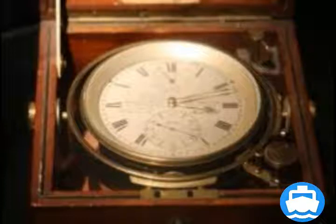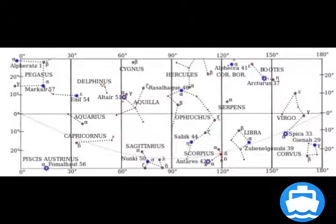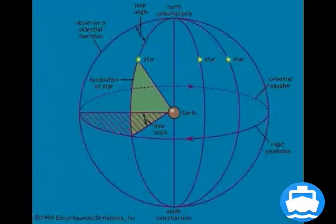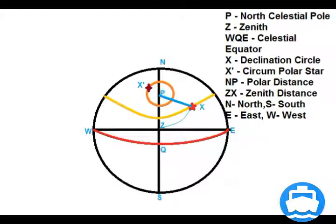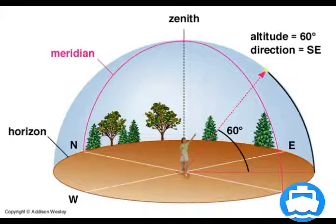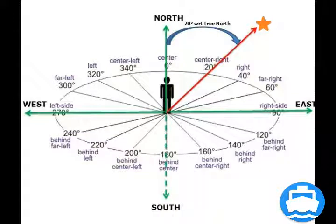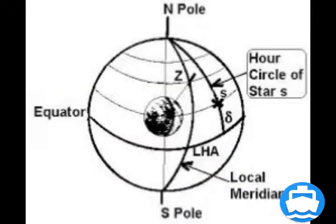Now we have the azimuth and altitude of the star. We will identify the star using a star chart in our nautical almanac. From the nautical almanac, we obtain the declination and SHA of the star in question. Then we solve the PZX triangle to calculate zenith distance and true azimuth. Solving the PZX triangle gives us a position line and not an accurate position — because zenith distance is an approximation. So we will require many subsequent observations to determine an accurate position.